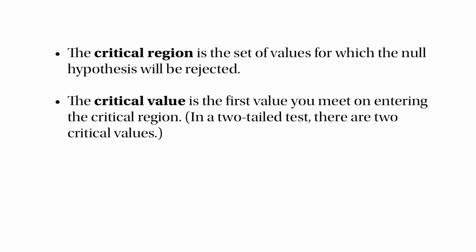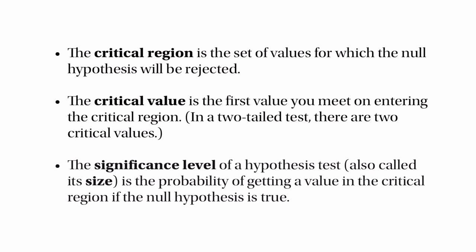Bear in mind that if you have a two-tailed test, then there will be two critical values. The significance level of a hypothesis test, which is also called the size of a hypothesis test, is the probability of getting a value inside the critical region if the null hypothesis is actually true.